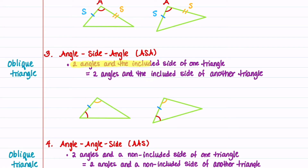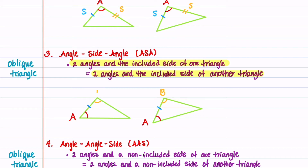Two angles and the included side of one triangle are equal to two angles and the included side of another triangle. Our angles in red are equal, our angles in orange are equal, and the sides between these two angles are equal.